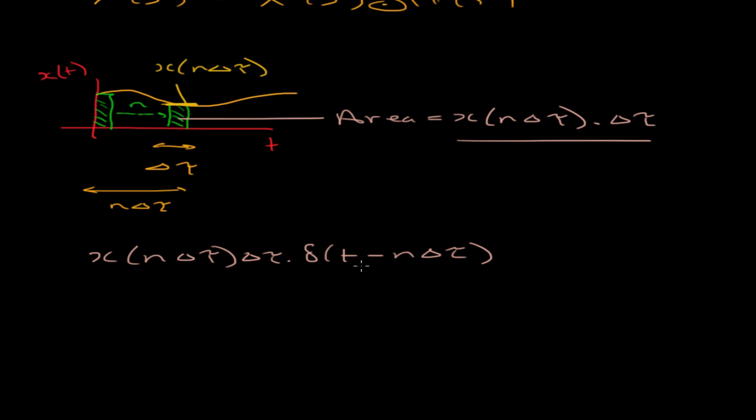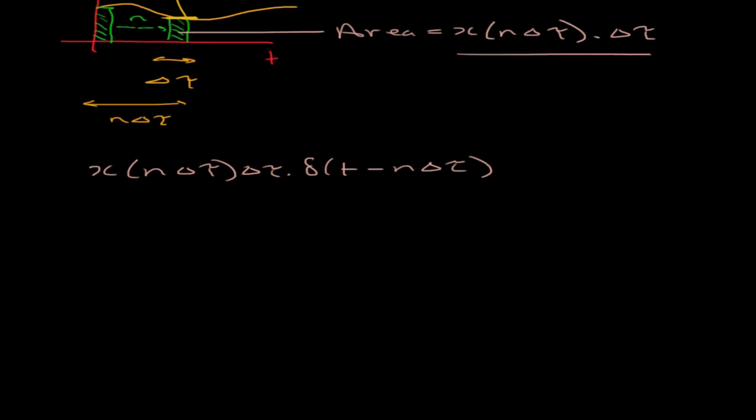However, what I can do is consider all impulses, all n impulses along here, add them all up, and I will actually get x of t. If I add them all up, all the way from minus infinity to infinity, that's every one of them, I'll get the summation over n of x n delta tau delta tau delta t minus n delta tau. This sum describes the entire curve x of t.